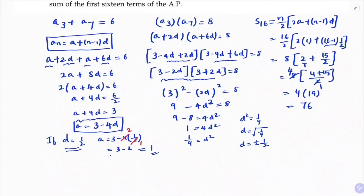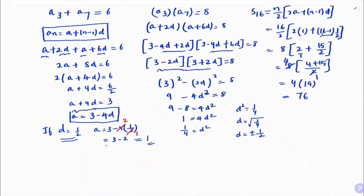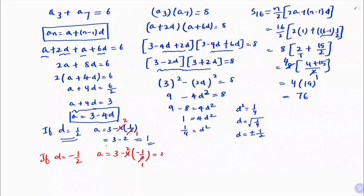Case 2: suppose d = −1/2. Substituting into a = 3 − 4d: a = 3 − 4 × (−1/2) = 3 + 2 = 5. So a = 5.